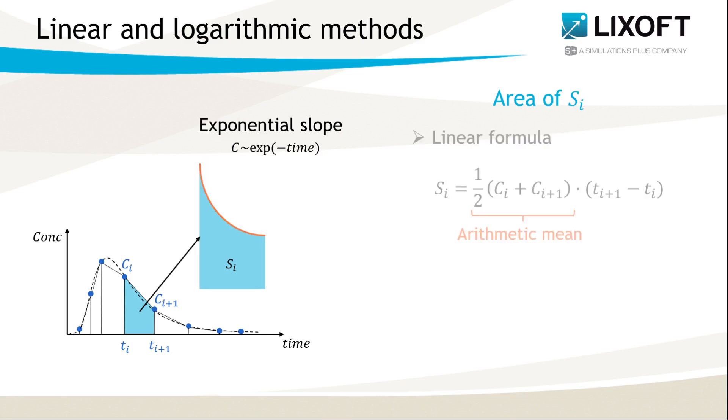In the logarithmic method, the sloping line does not follow a linear path, but instead it follows the exponential decline with time. The total area is given by the sum of sub-areas computed with the following formula. So why do we use it? We use it because we assume that the elimination phase is exponential, and so this logarithmic method can approximate it more accurately.